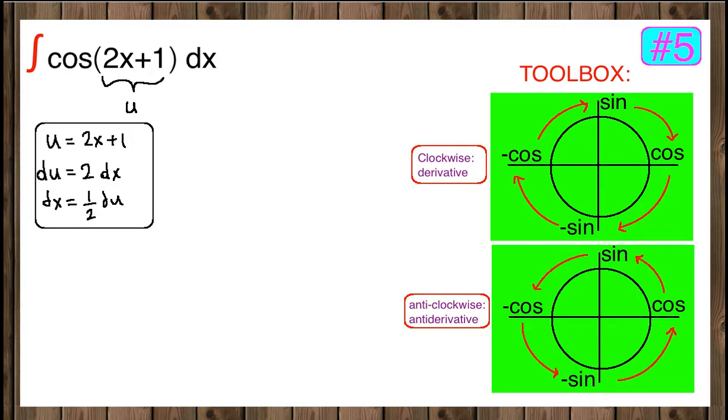Now let's write everything in terms of u. The integral becomes cosine of u, and instead of dx we write one-half du. We can pull one-half to the front.